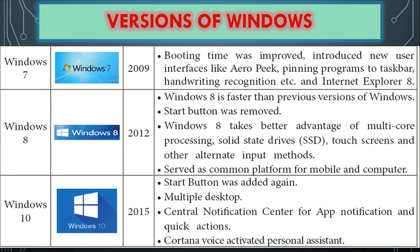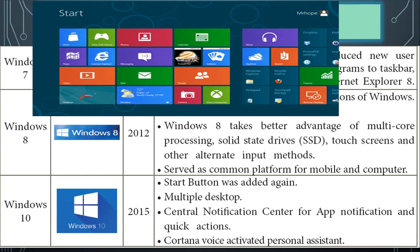Windows 8, introduced in 2012, is faster than previous versions. It introduced multi-core processing with more than two processors. It also introduced solid-state drives and touch screen support. Windows 8 supported touch screen and alternate input methods — keyboard, mouse, and touch screen. It served as a common platform for both mobile and computer use.